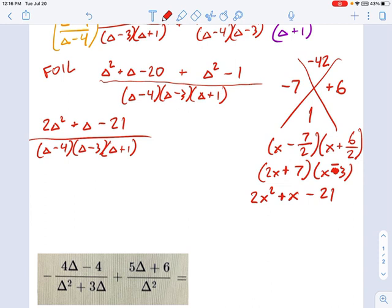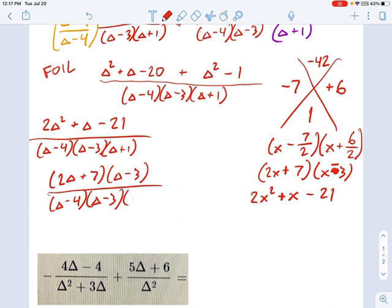Now, let's come back over here and put our factored form back in this equation. 2 delta plus 7 and delta minus 3 divided by delta minus 4 and delta minus 3 and delta plus 1.